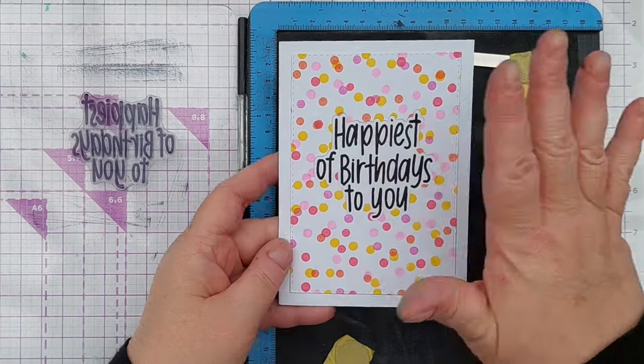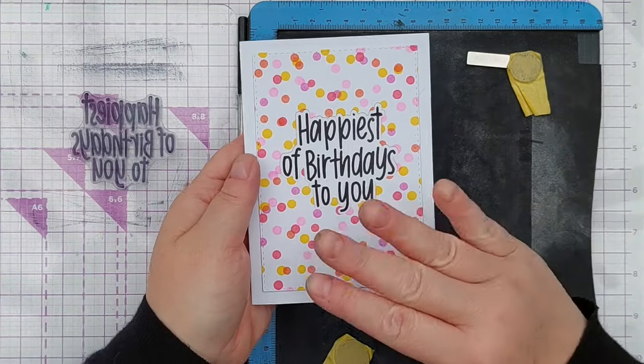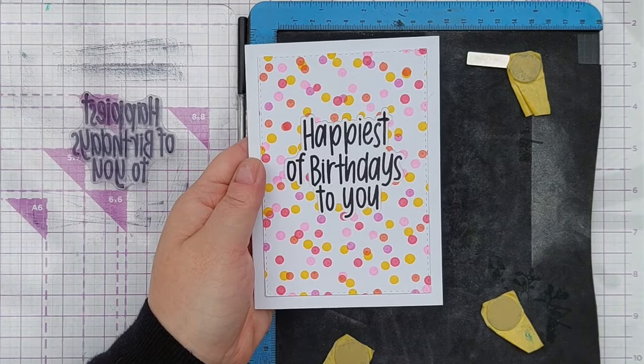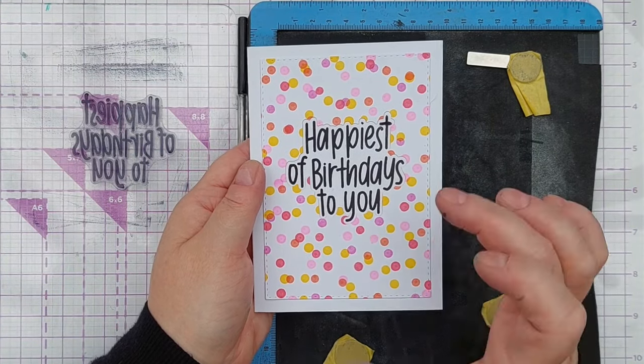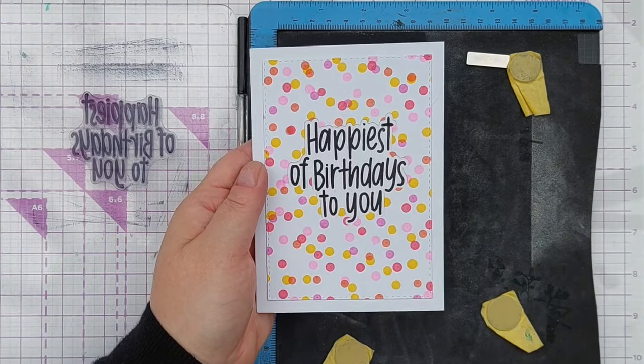So there we go. I'm really pleased with that. I think that really pops amongst all the colors. Of course, if you didn't want to die cut a hole in your circle dotty piece of paper, you could always stamp on a white shape and stick that on top.